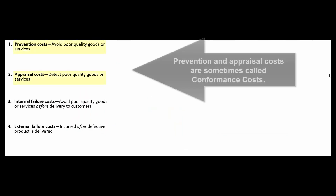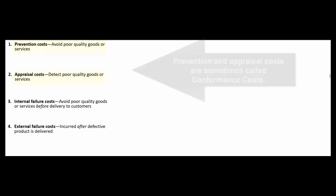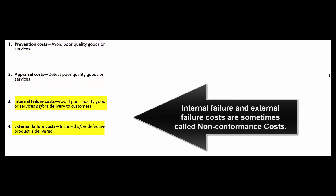There are four costs of quality and they break down into two categories. The conformance costs — prevention and appraisal — where we're trying to get our stuff to conform to our standards. And then the non-conformance costs: the internal failure costs and the external failure costs, where we produce a product that doesn't conform to our standards.